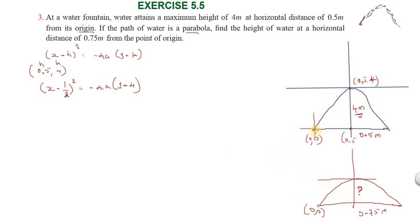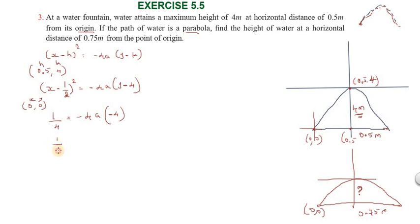Now substitute the origin point (0, 0). So x = 0 and y = 0. We get: (0 minus 1/2) squared equals minus 4a into (0 minus 4). That gives 1/4 equals 16a, so a equals 1/64.